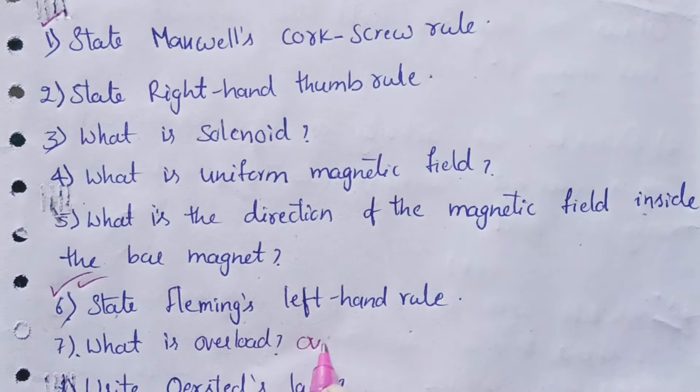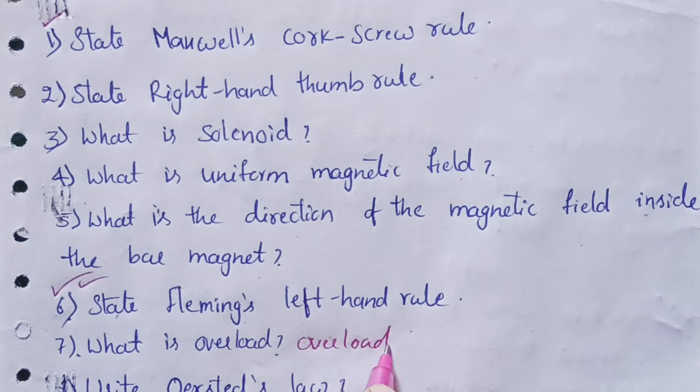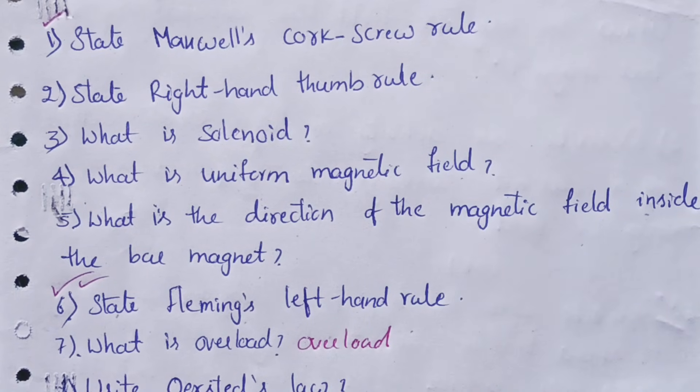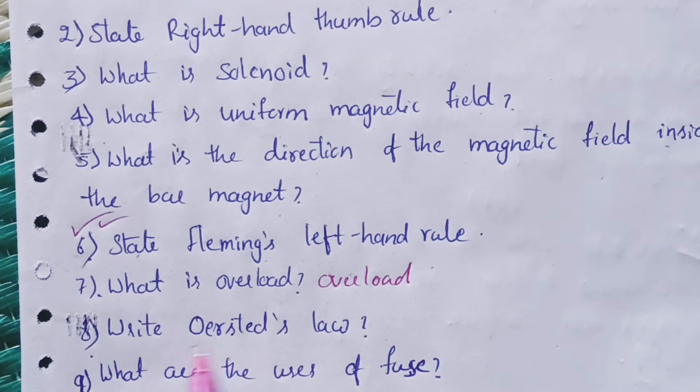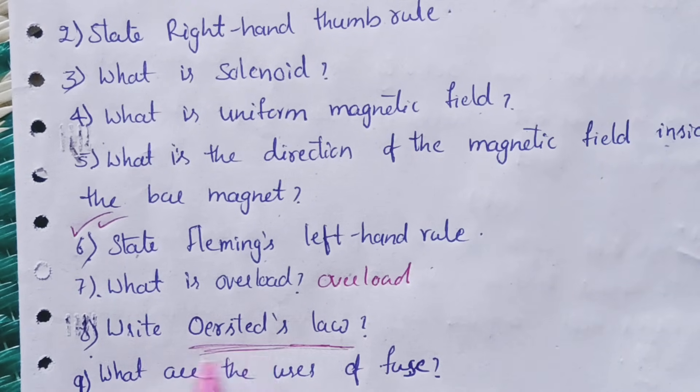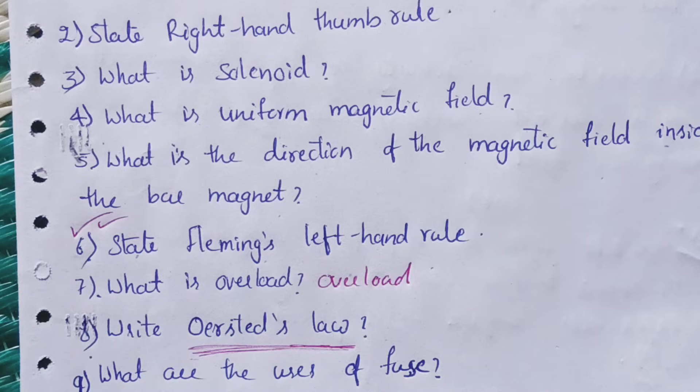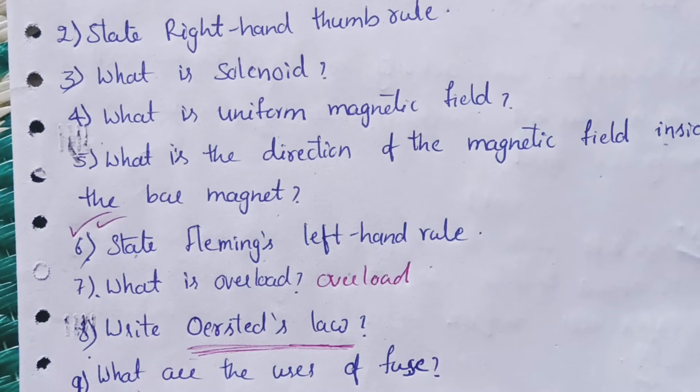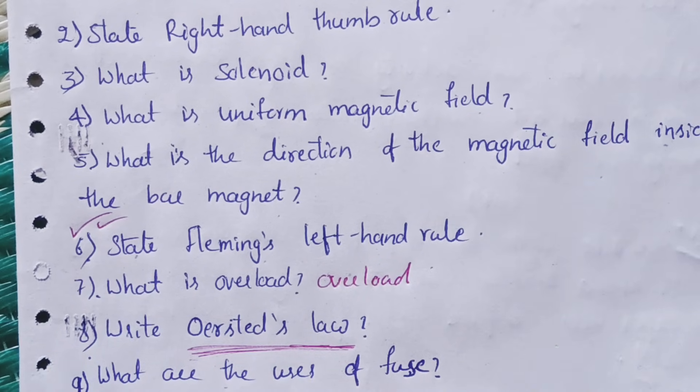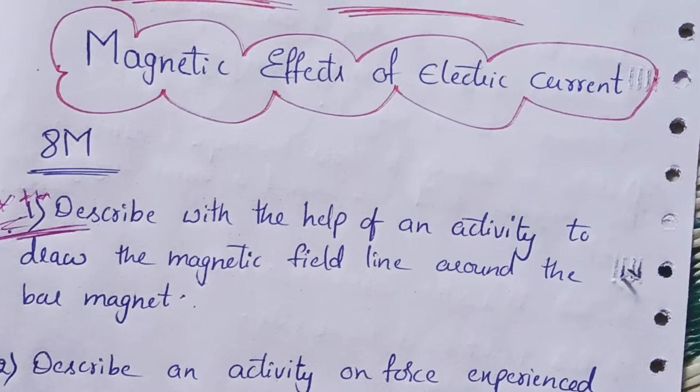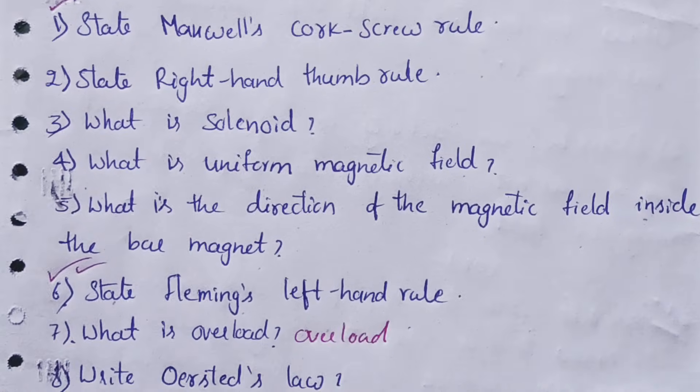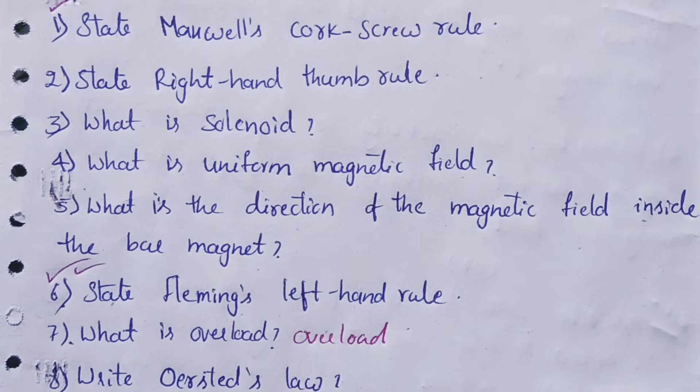Fourth one is: what is uniform magnetic field? Fifth one is: what is the direction of the magnetic field inside the bar magnet? Next, state Fleming's left hand rule - this is also important. Seventh one is: what is overload? Next one is: write or state Oersted's law. Last question is: what are the uses of fuse?